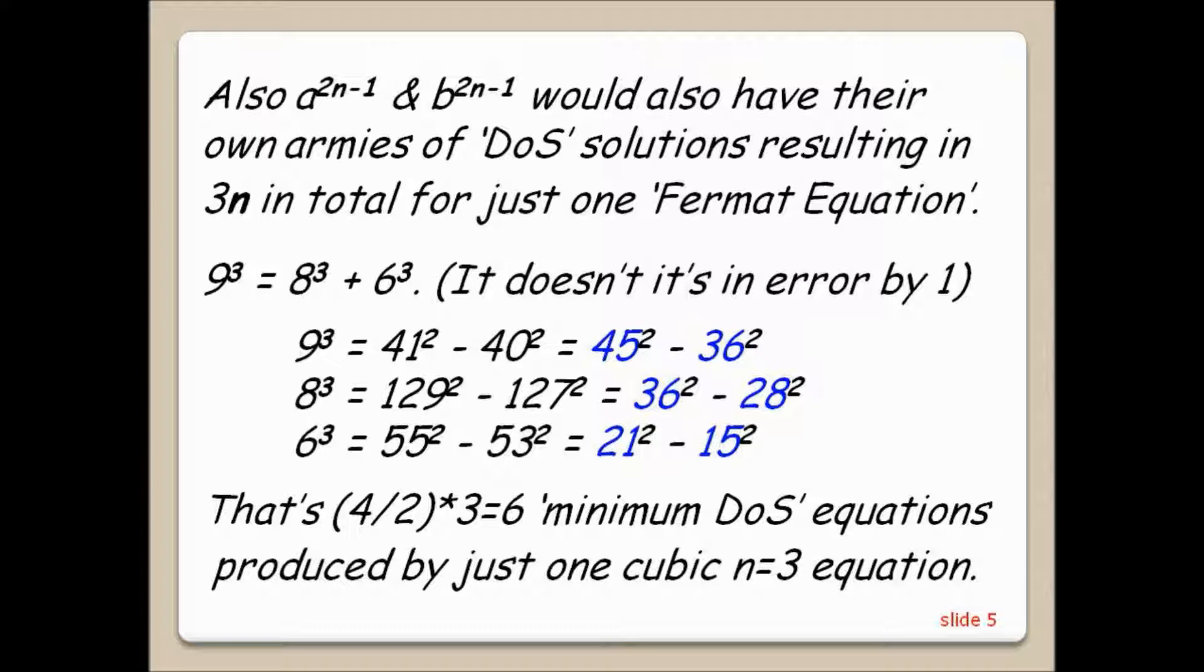8 cubed equals 129 squared minus 127 squared equals 36 squared minus 28 squared. 6 cubed equals 55 squared minus 53 squared equals 21 squared minus 15 squared.